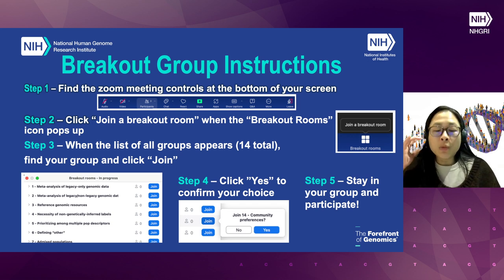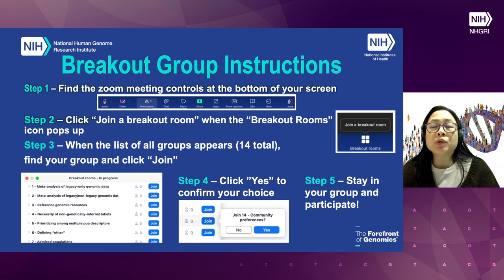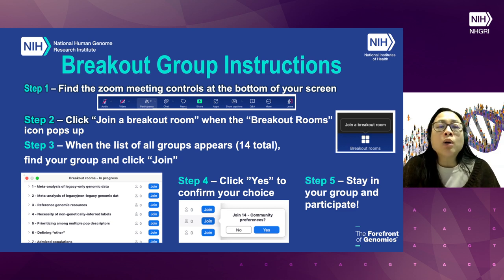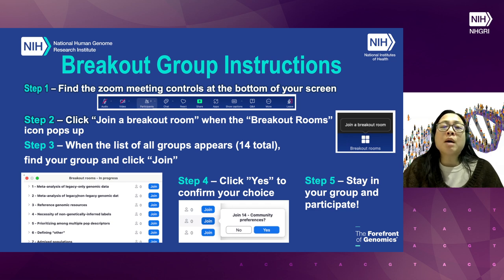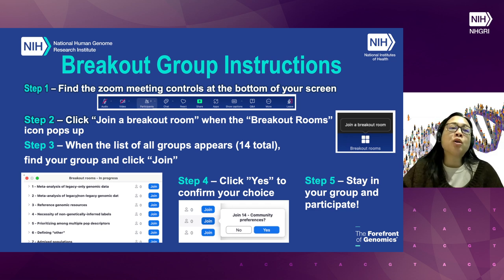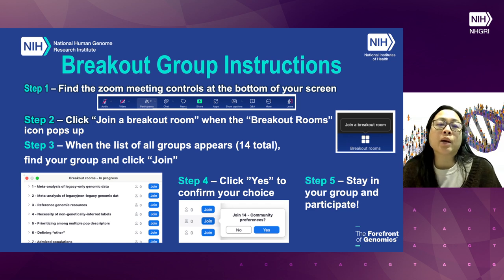Just to let everyone know, we are having a panel next. But after that, we would like everyone to break out into different breakout groups, and we thought we would give you a quick little intro if you haven't done breakout groups in a while. If you all go to the bottom of your Zoom media controls, you will see a number of icons. When it's time to break out, there will be a pop-up that says 'breakout rooms' and then 'join a breakout room.' You'll check that box, find the group you want to join, click the join button, confirm your choice, and that should put you in the Zoom room with the other participants.